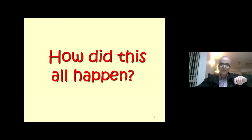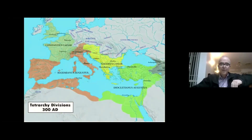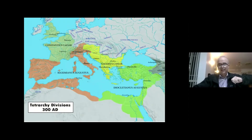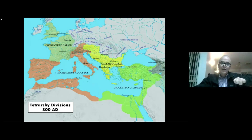Now we need to talk a little about history — how did this all happen in such a short time? Here is what the Roman Empire looked like in the year AD 300. What we have is a tetrarchy — four divisions of the Roman Empire. This was Emperor Diocletian's way of establishing a peaceful empire by dividing the empire into east and west.